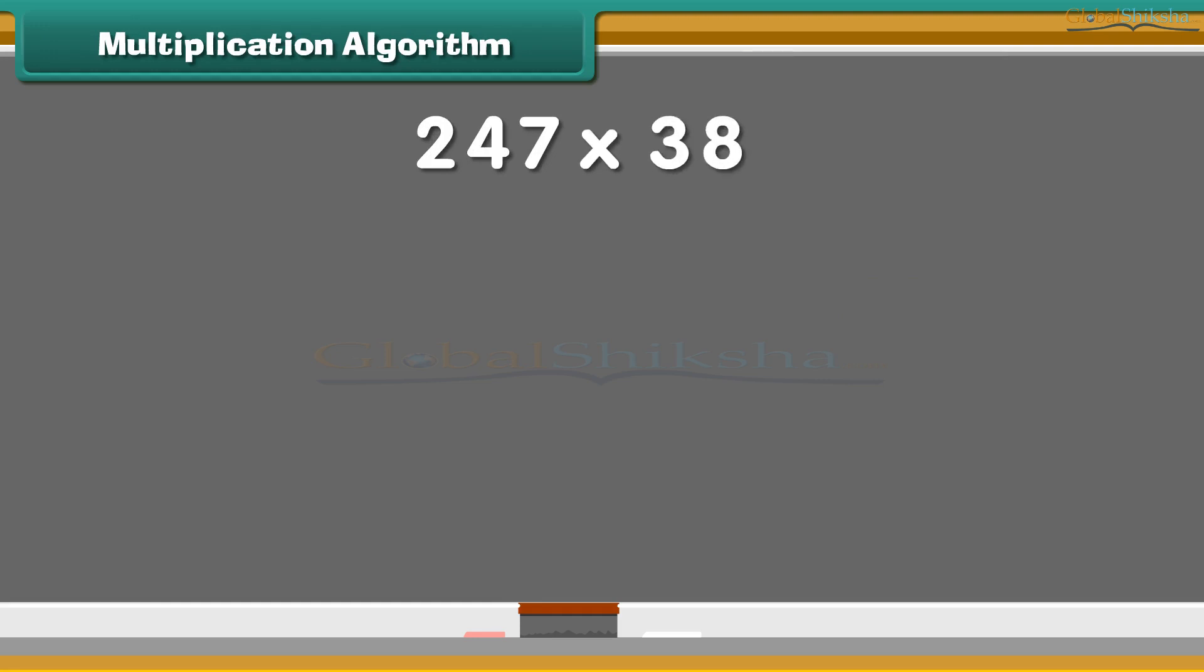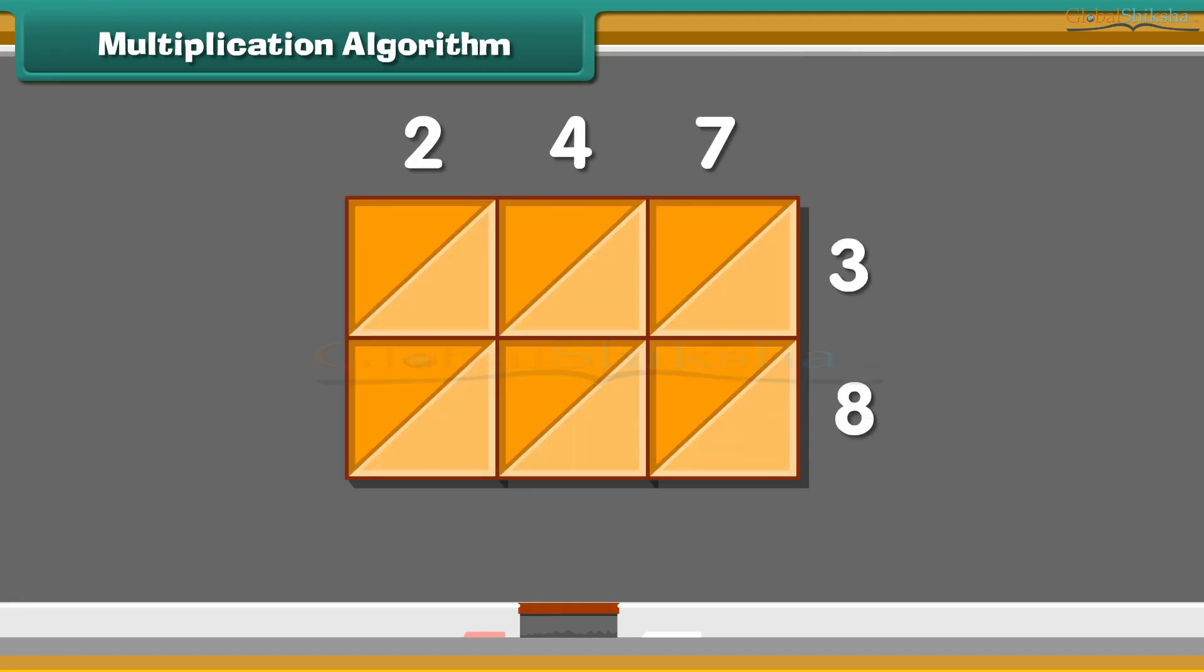Now we will multiply 247 and 38 by lattice algorithm. We will multiply the numbers one by one and write answers in this box. Write 10's in 10's box and 1's in 1's box. Firstly, multiply 2 and 3. Answer is 6. Write 1's in lower box and 10's in upper box. Then multiply 4 by 3. 4 times 3 is 12. Write answer in the box. Now 7 times 3 is 21.